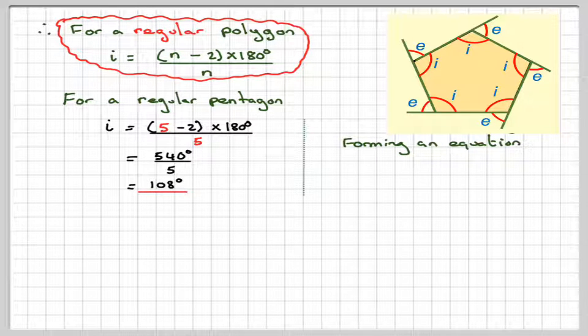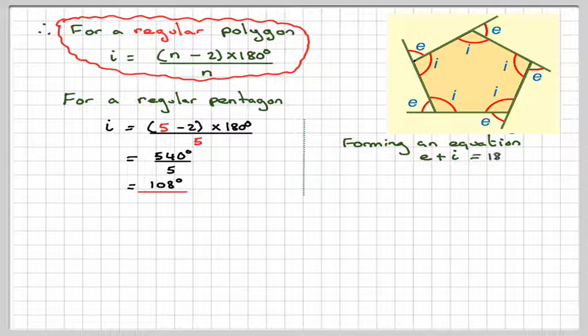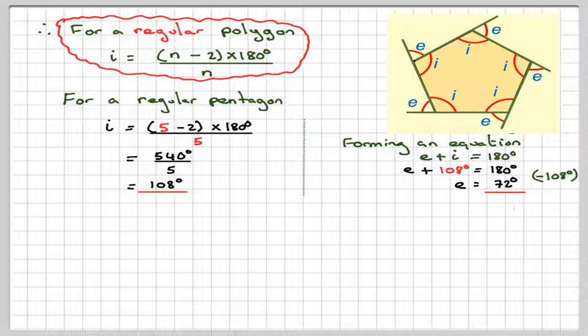Now for the exterior angle, what we know is that I plus E, or E plus I, must be equal to 180 degrees. So as I know I, I can form the equation, so E plus 108 is equal to 180. They add up to 180 because they're on a straight line, and therefore E will be 72 degrees.